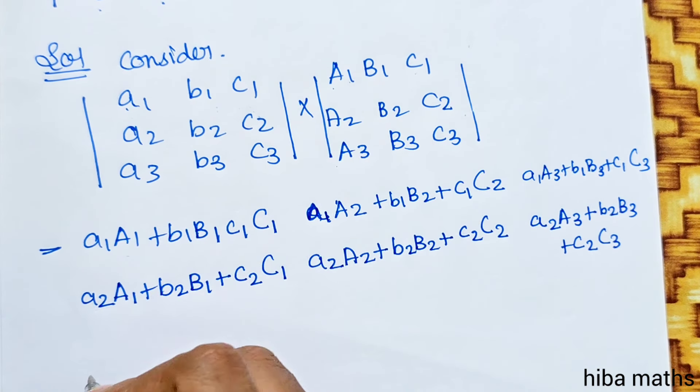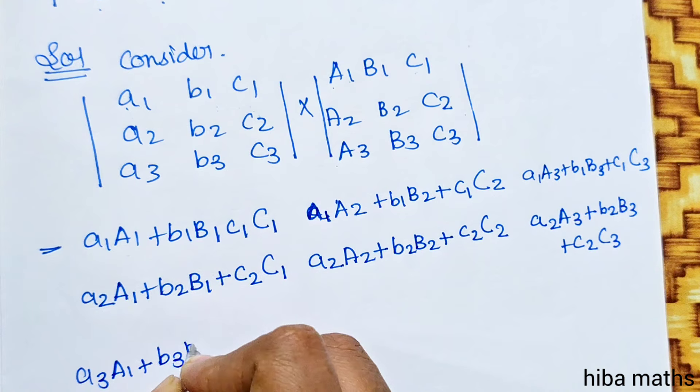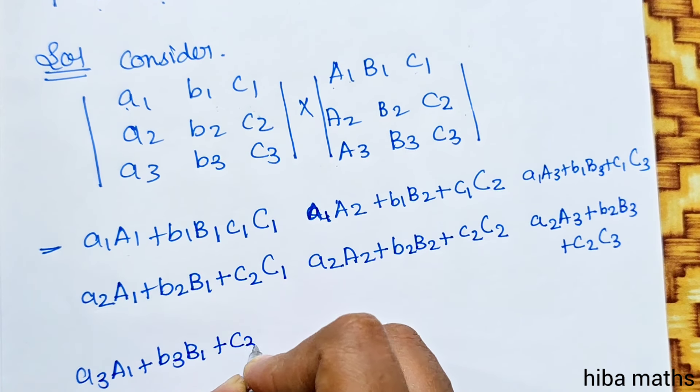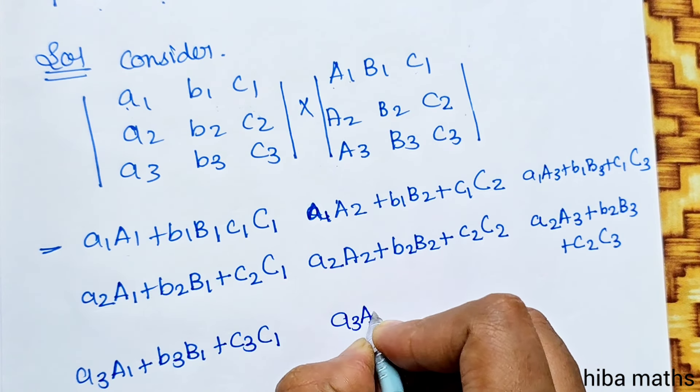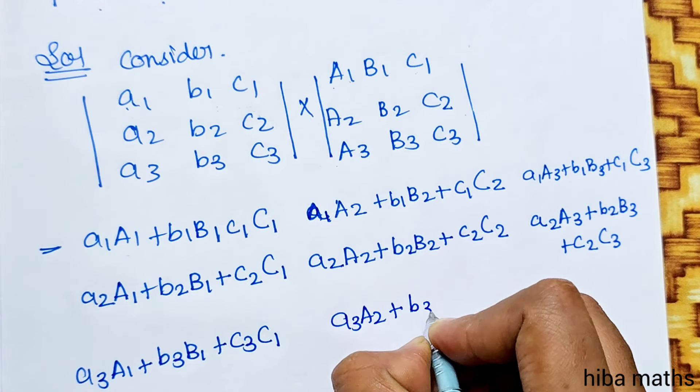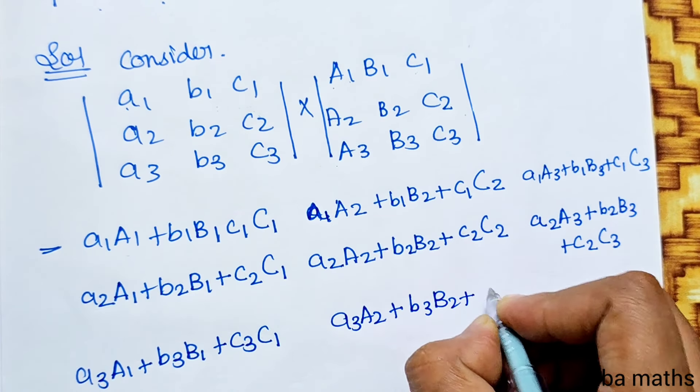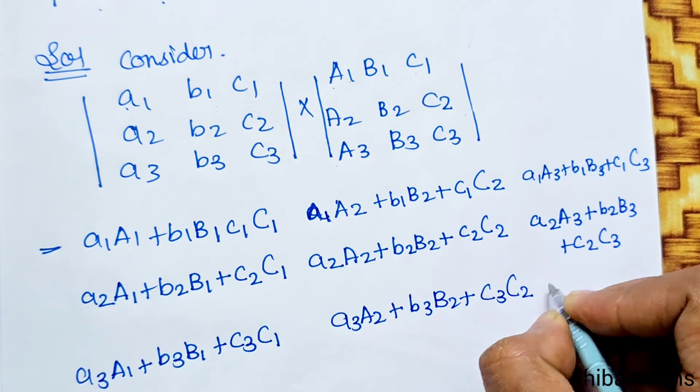Second row: a2 A1 plus b2 B1 plus c2 C1, a2 A2 plus b2 B2 plus c2 C2, a2 A3 plus b2 B3 plus c2 C3.